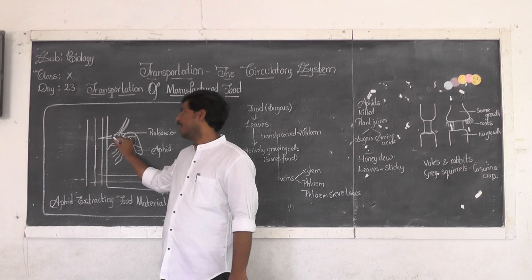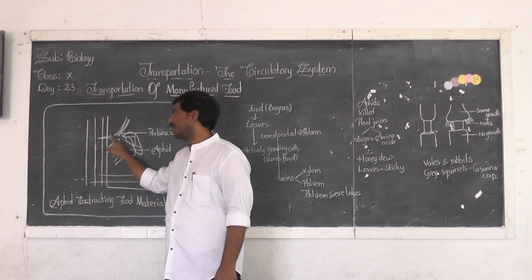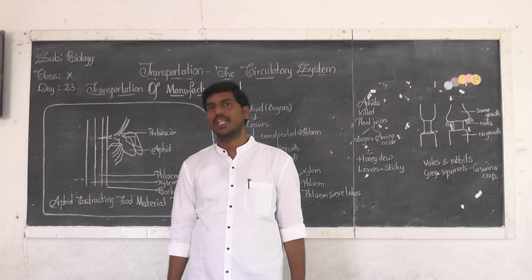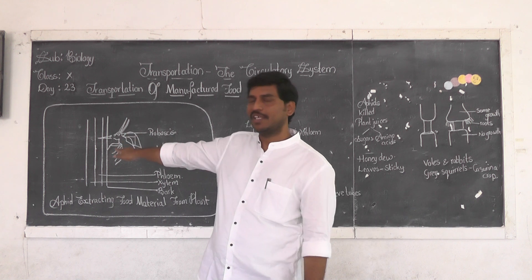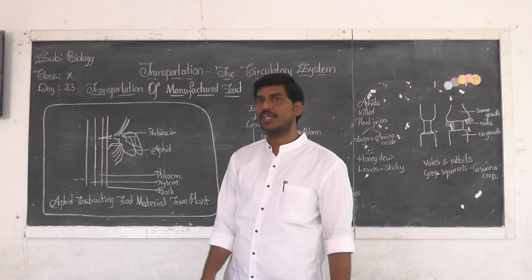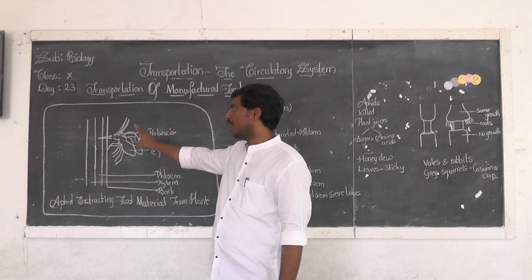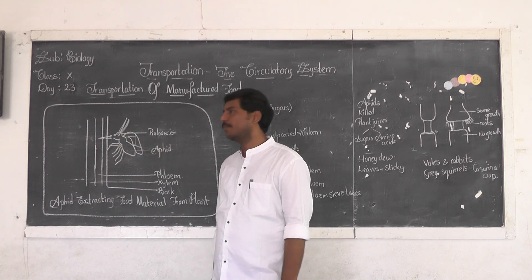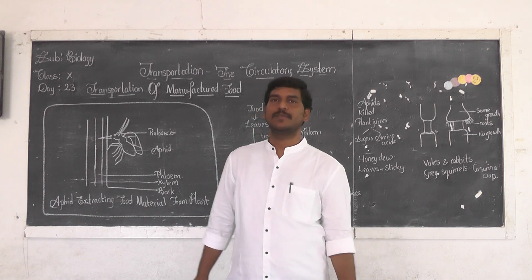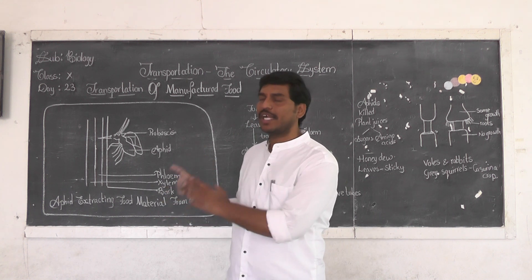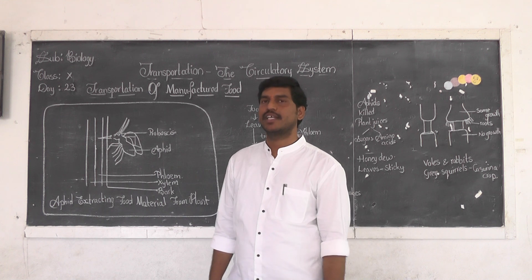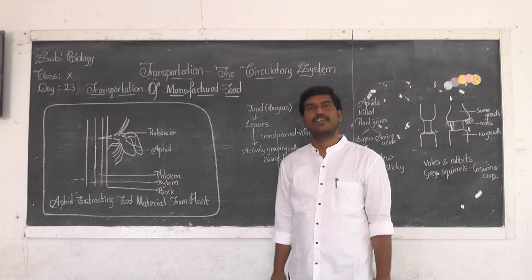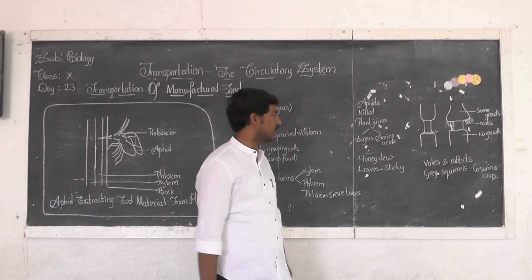The juices oozing out contained sugars and amino acids — the same substances that phloem sieve tubes or phloem contains. They came to the hypothesis that phloem vessels are responsible for conduction of food material. After that, they cut the plant body and confirmed the mark of the proboscis was still in the phloem. They concluded that aphids depend on phloem for their food material, and phloem is a vascular tissue that helps in transportation of food materials.